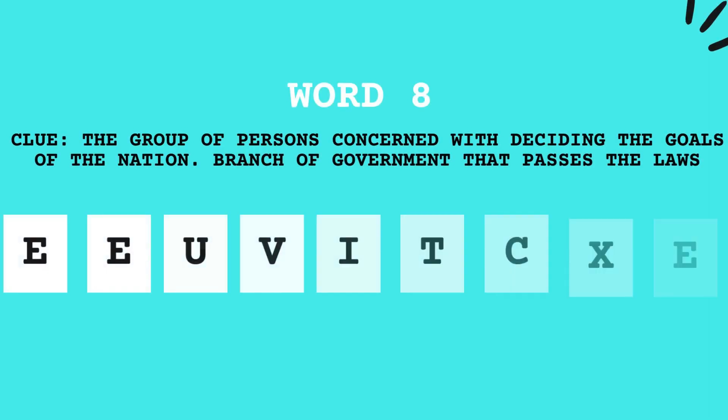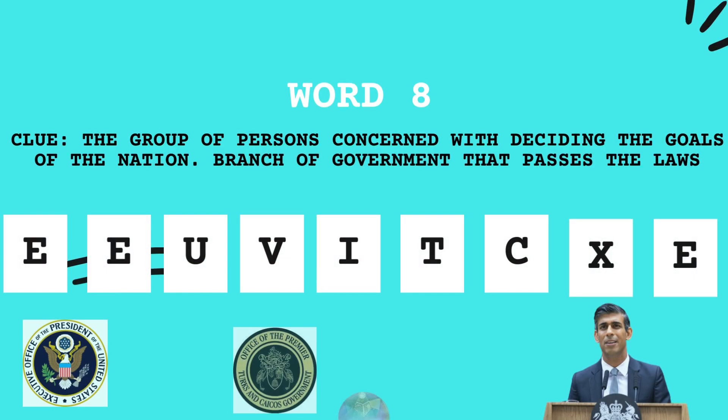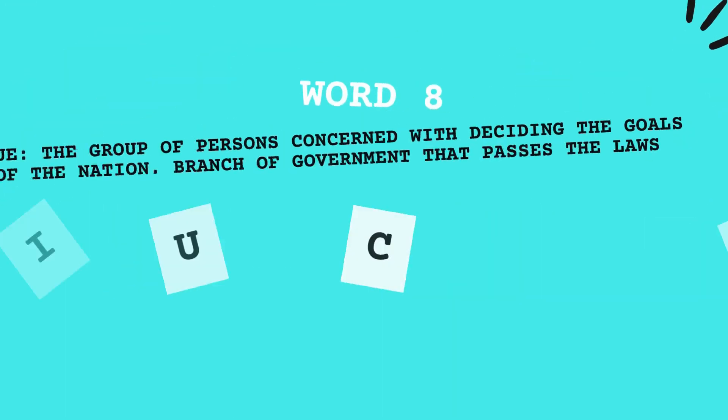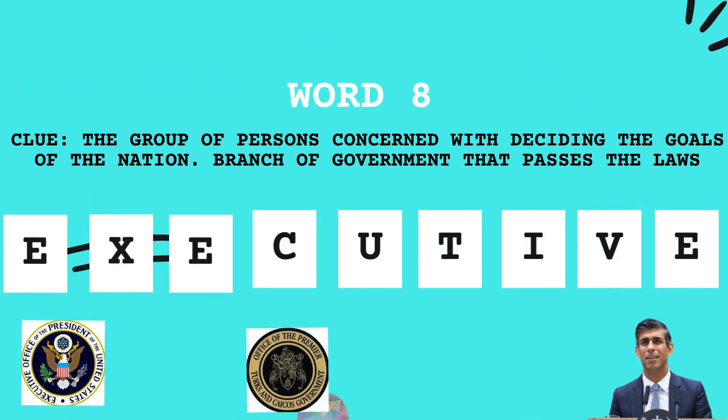Now, these are the group of persons concerned with deciding the goals of a country. This is a type of branch that usually contains the prime minister, the president, or the premier. Yes — the executive.